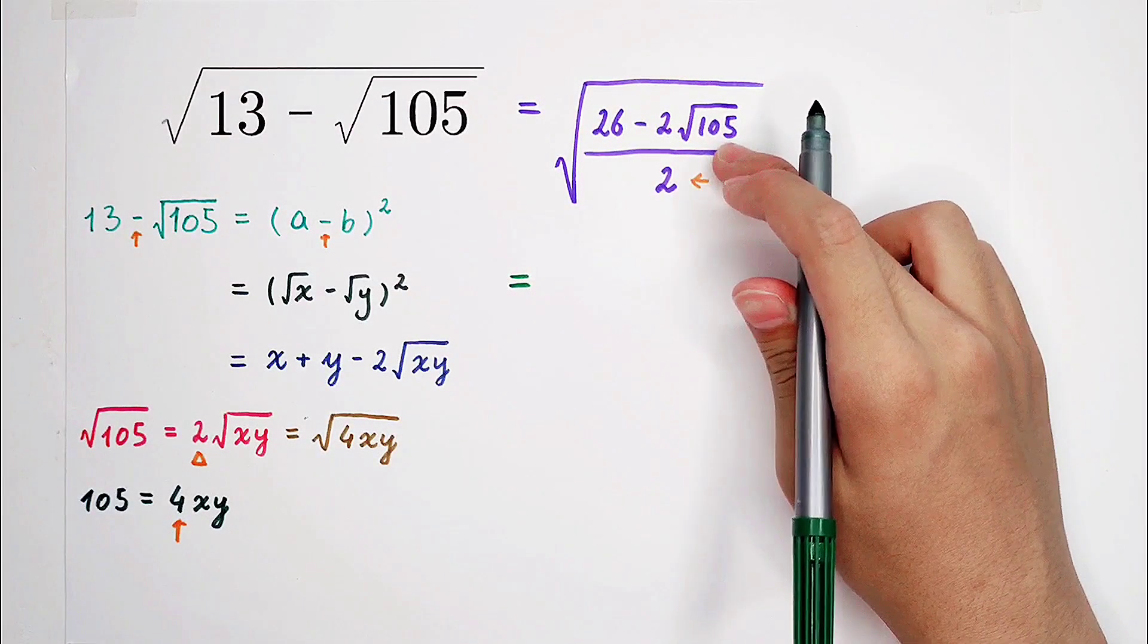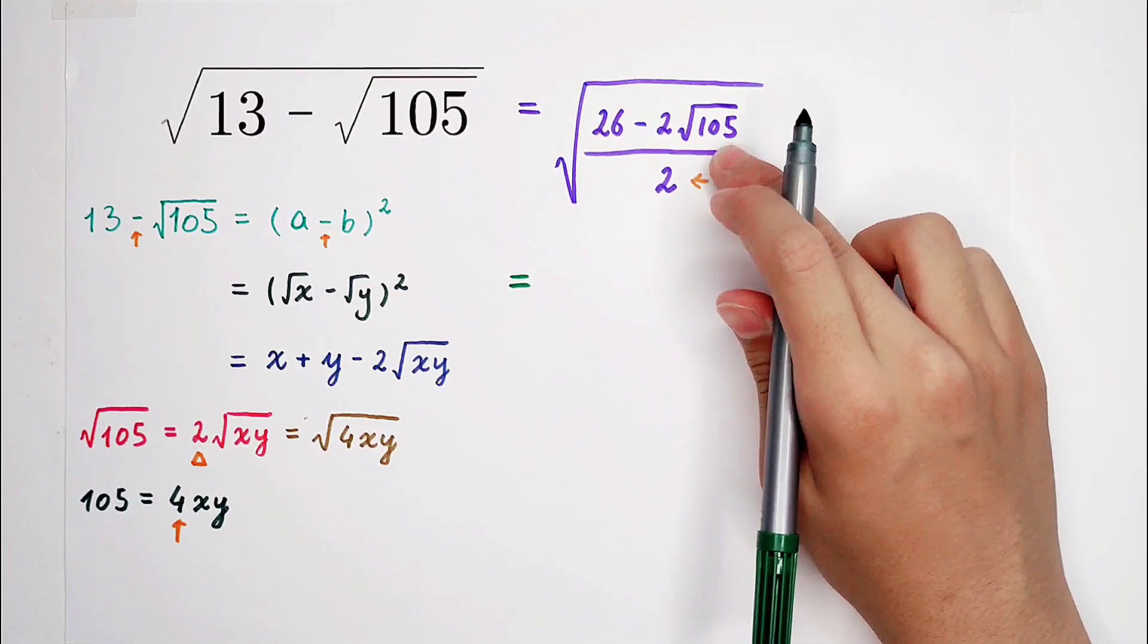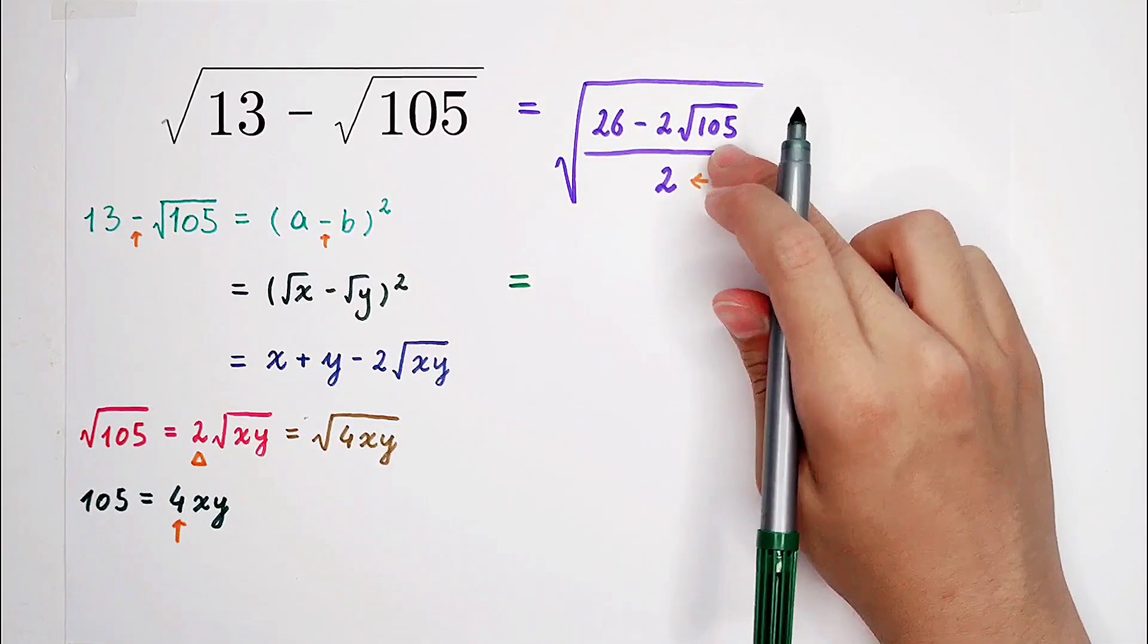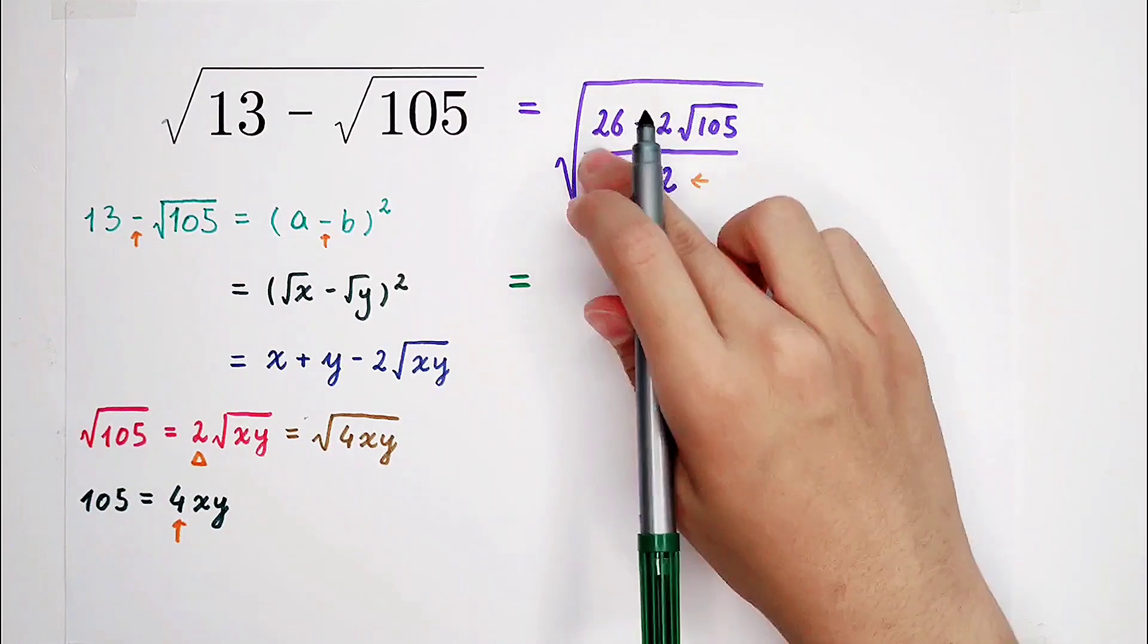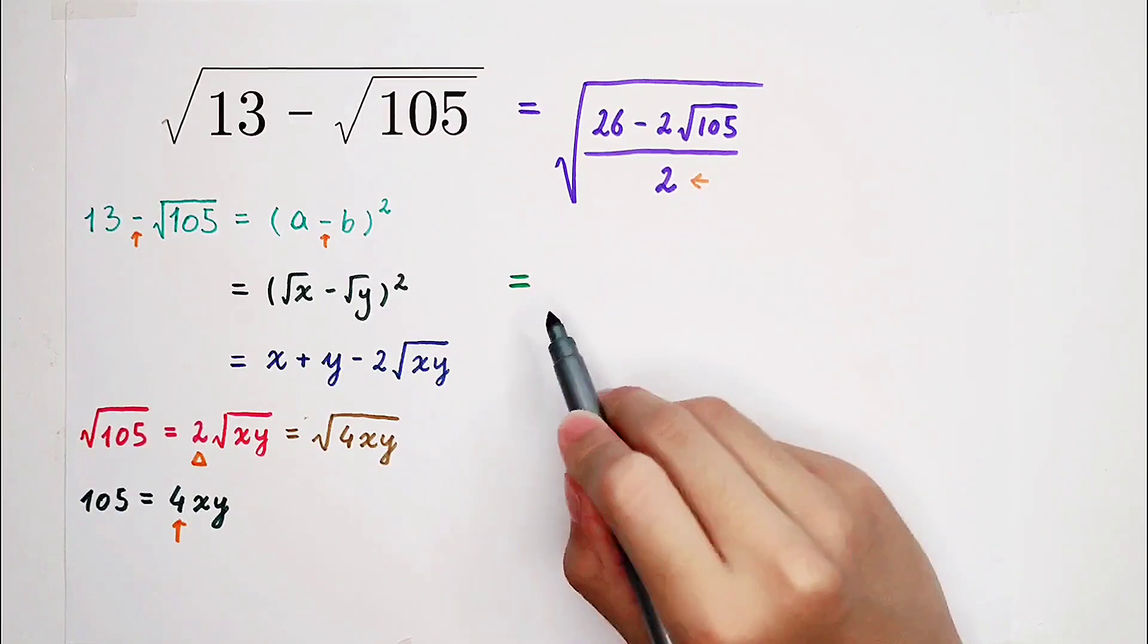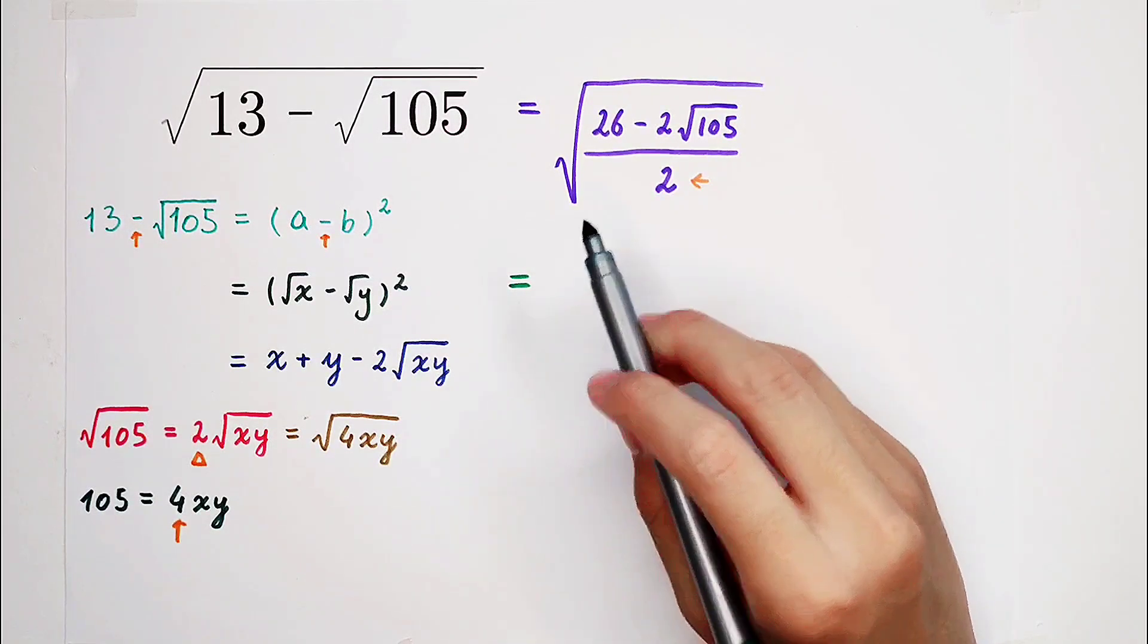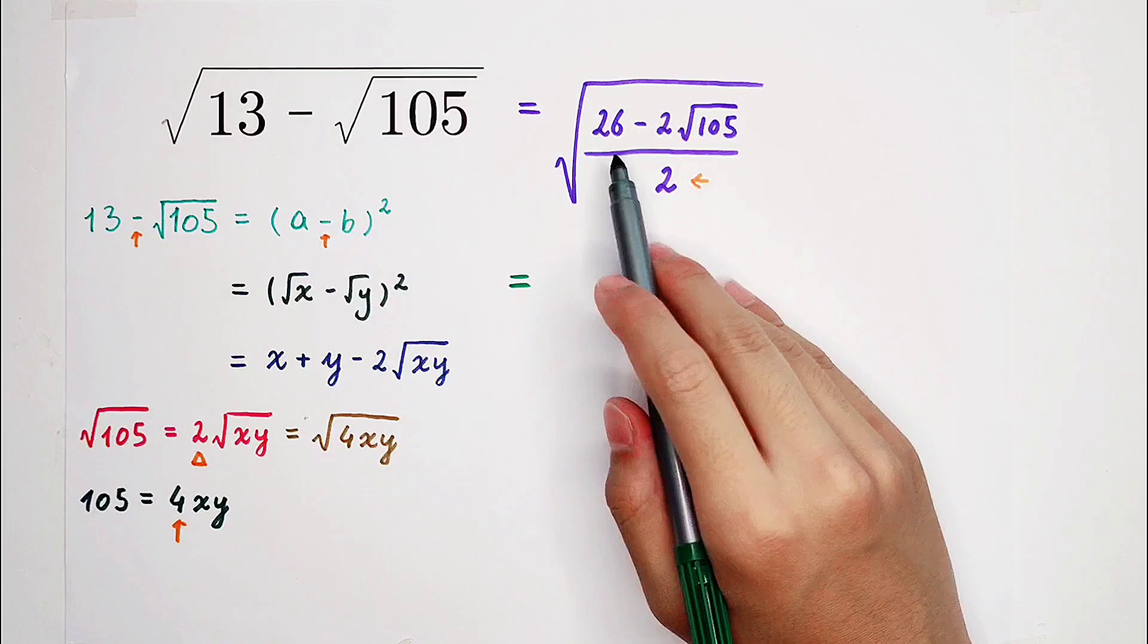Now we only have to find two numbers whose multiplication is 105 and addition is 26. Now these two numbers are 5 and 21.